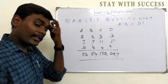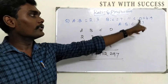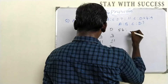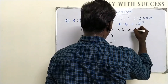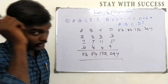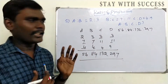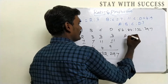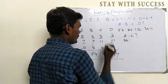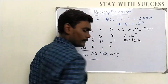So the ratio A is to B is to C is to D is 56 is to 84 is to 132 is to 297. If we want to know A is to C, the answer is 56 is to 132.